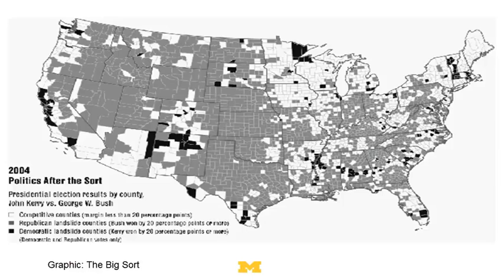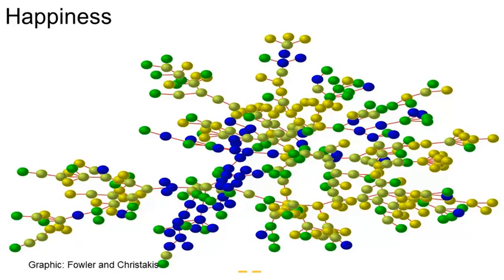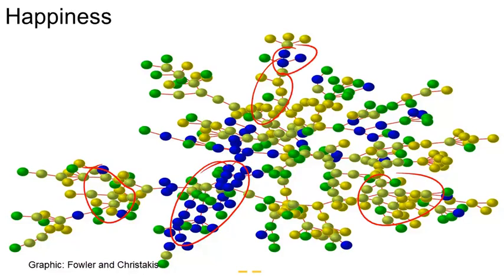You could also make the argument that this happened because of peer effects — that people moved into Democratic districts, there were more Democrats around them, and so they just became Democrats. Here are some pictures from the book "Connected," which argues for peer effects, and this has to do with happiness. People who are blue are unhappy and people who are yellow are happy. You see clusters of yellow people and clusters of blue people — unhappy people hang out together and happy people hang out together. Christakis and Fowler argue this is peer effects: if you're unhappy but start hanging out with happy people, you become happy. But one can make the alternative argument that this is because of sorting.